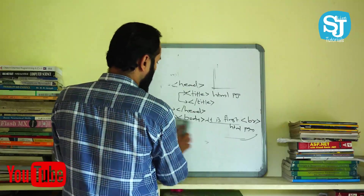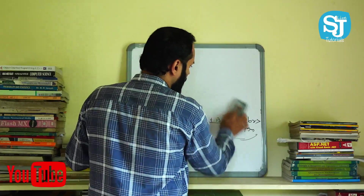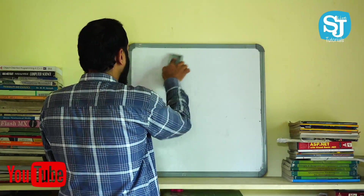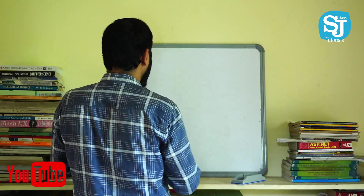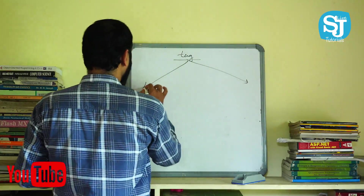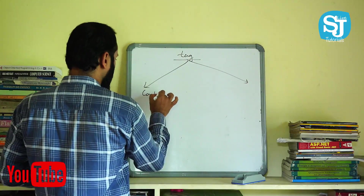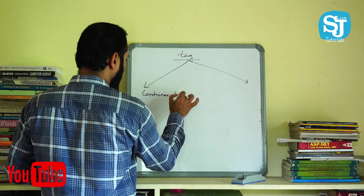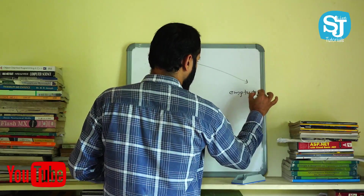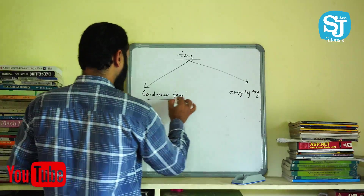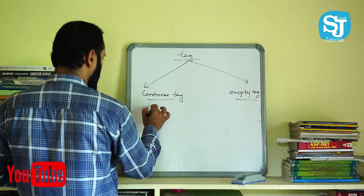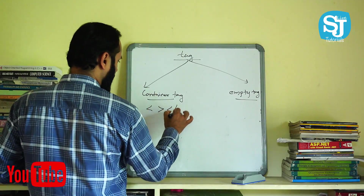We have less than or greater than — we're doing a tag. In HTML, we have two types of tags. That's why one type is called a container tag. Let's look at the empty (MT) tag. Why do you call the container tag? It has an opening tag and a closing tag.